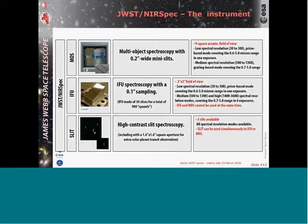The first mode is multi-object spectroscopy, typically with 200 milli-arcsecond-wide mini-slits. What we call a wide field of view — fairly small compared to ground-based multi-object spectroscopy, but a decent field of view: 3.4 by 3.6 arcminutes. You get spectroscopy at low and medium spectral resolution — medium for us is around R=1000 — and the wavelength range, one thing for NIRSpec, is fairly large: from 0.6 to 5 microns.